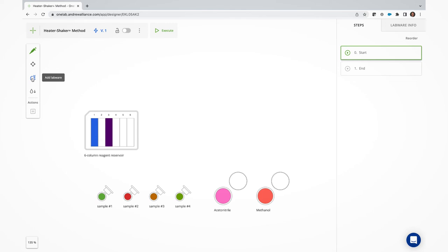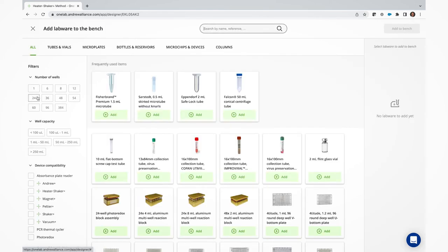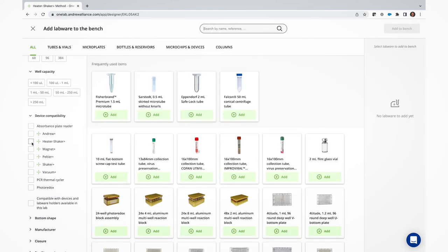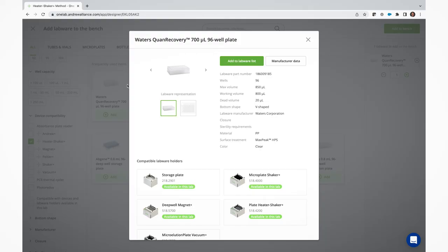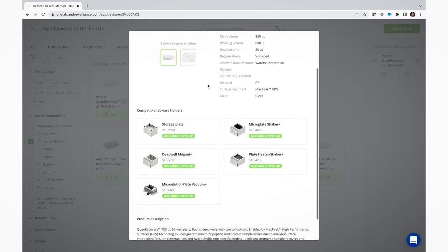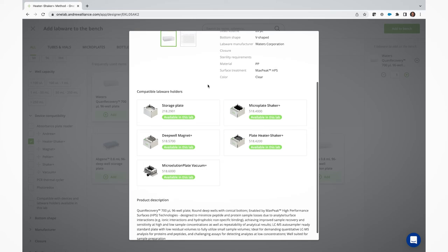Let me show you how to create a protocol step that will utilize a Heater Shaker Plus device. Once in the protocol designer window of OneLab, it's important to first select Heater Shaker Plus compatible labware. This can be done by simply ticking the Heater Shaker Plus compatibility filter on the left of the labware selection window. Any consumable chosen from this filtered list will then trigger the use of the device during the execution phase.